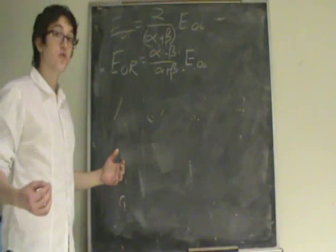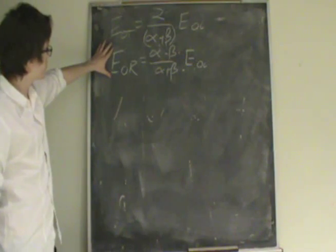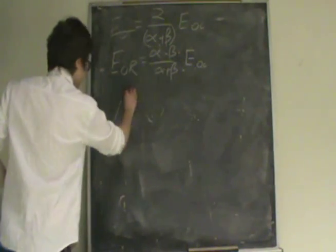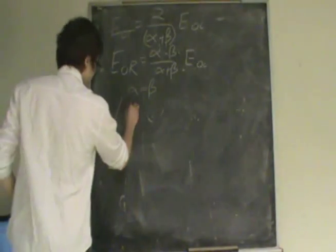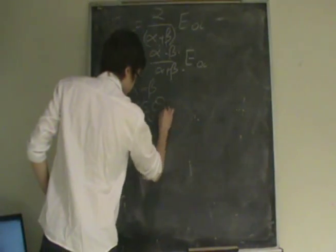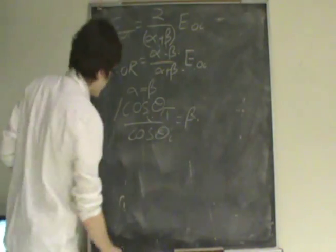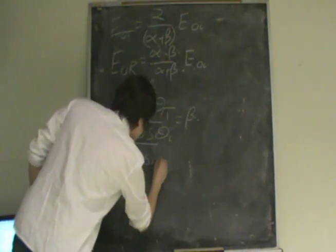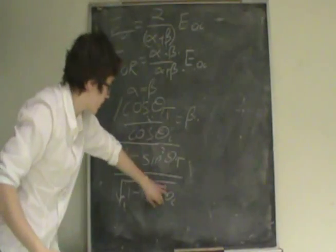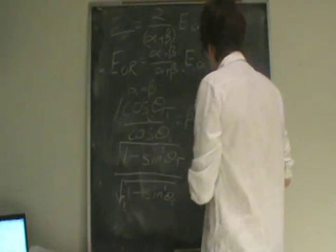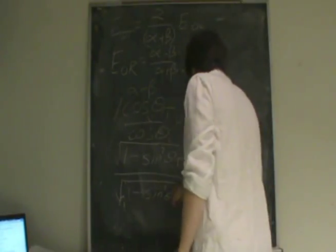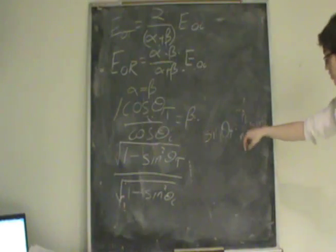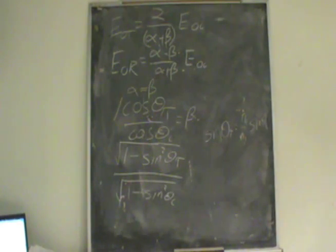We can also explore Brewster's angle in this case. We'll see when the reflective term is zero, which is exactly when alpha equals beta. Recalling the definition of alpha and using the identity of sine and cosine, we know that cosine squared equals 1 minus sine squared with the respective angles. We then use Snell's law to relate the transmitted angle to the ratio of the index of refraction and the sine of the incoming wave.